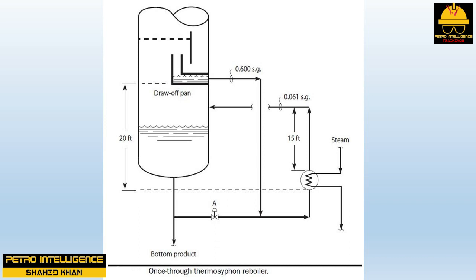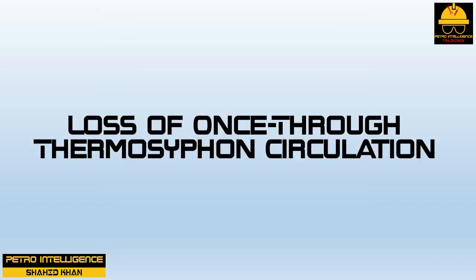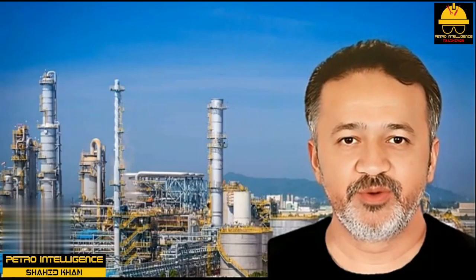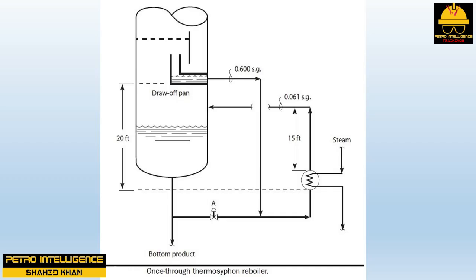The once-through thermosyphon reboiler operates as follows: all the liquid from the bottom tray flows to the reboiler; none of the liquid from the bottom of the tower flows to the reboiler. All the bottoms product comes from the liquid portion of the reboiler effluent. This means that when the once-through thermosyphon reboiler is working correctly, the reboiler outlet temperature and the tower bottom temperature are identical. If the tower bottom temperature is cooler than the reboiler outlet temperature, something has gone wrong with the thermosyphon circulation.